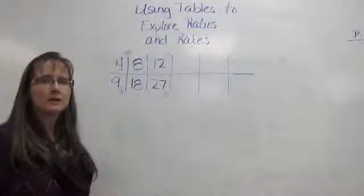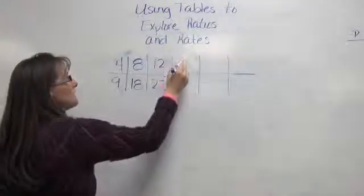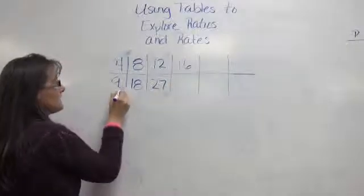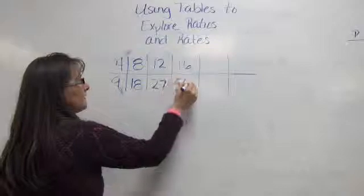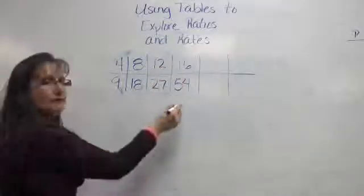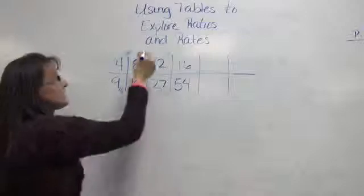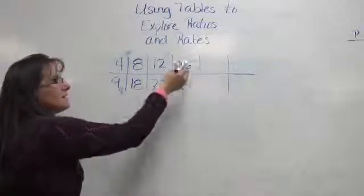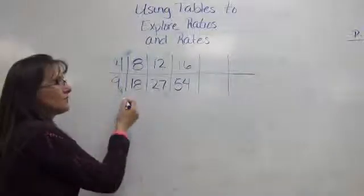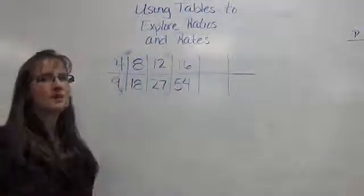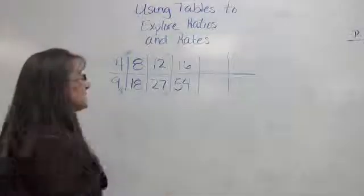I've done 4 times 3, so let's go ahead and do 4 times 4. 4 times 4 is 16. Remember, I must also do that to the denominator. 9 times 6 is 54. So 16 fifty-fourths is the same thing as 12 twenty-sevenths, which is the same thing as 8 eighteenths, which is the same thing as 4 ninths. All of the fractions we are creating using this process are equivalent fractions.